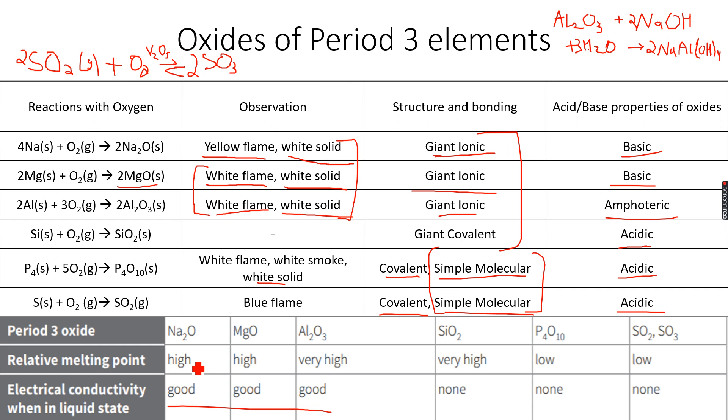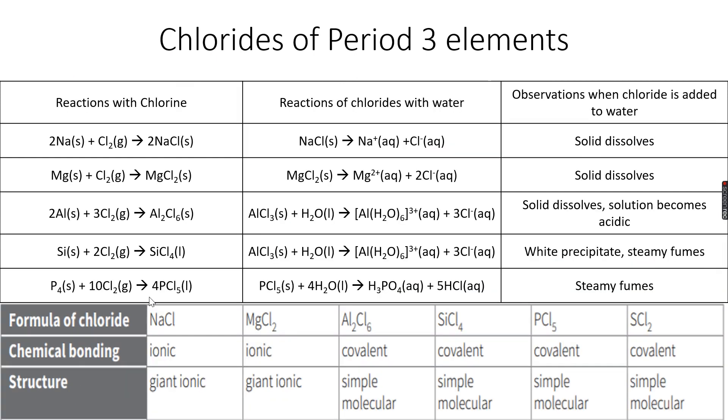This was the relative melting points and electrical conductivities. Now we come to the chlorides of Period 3 elements.